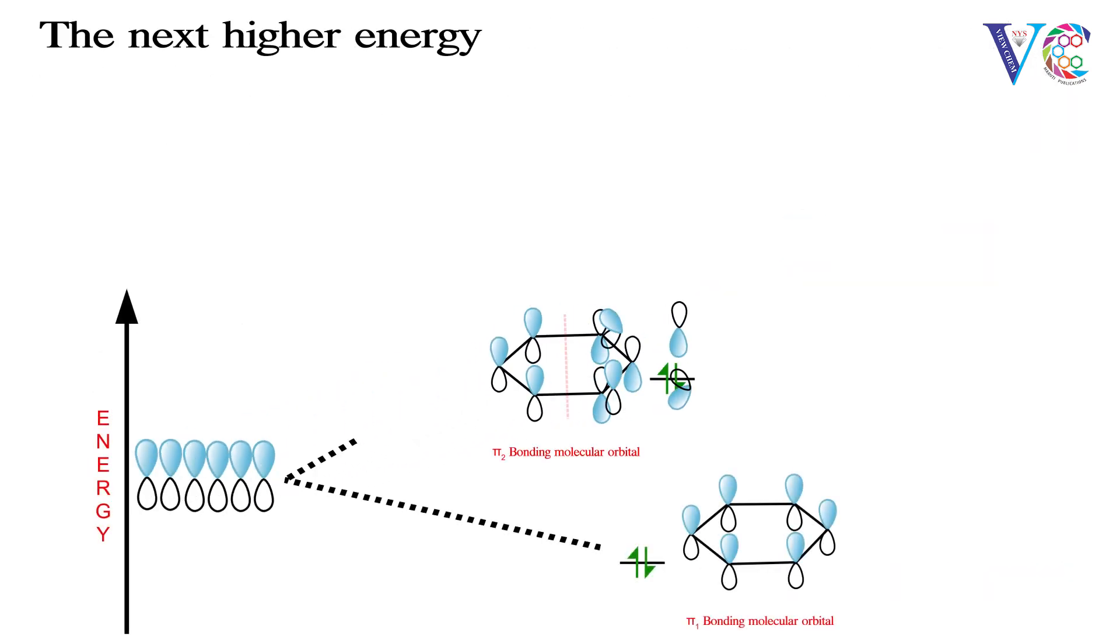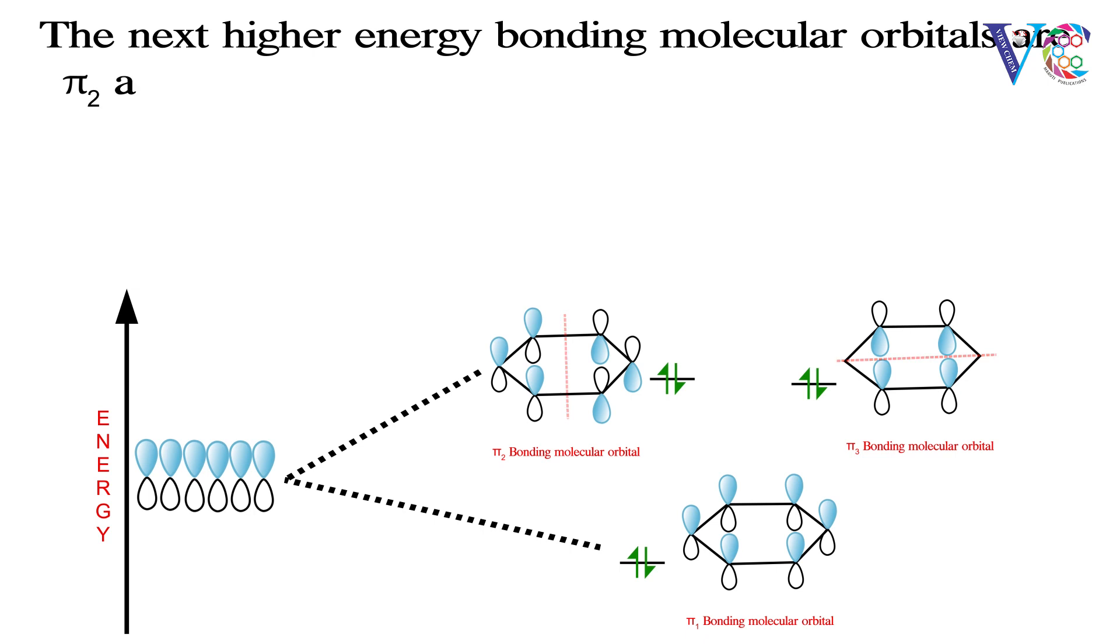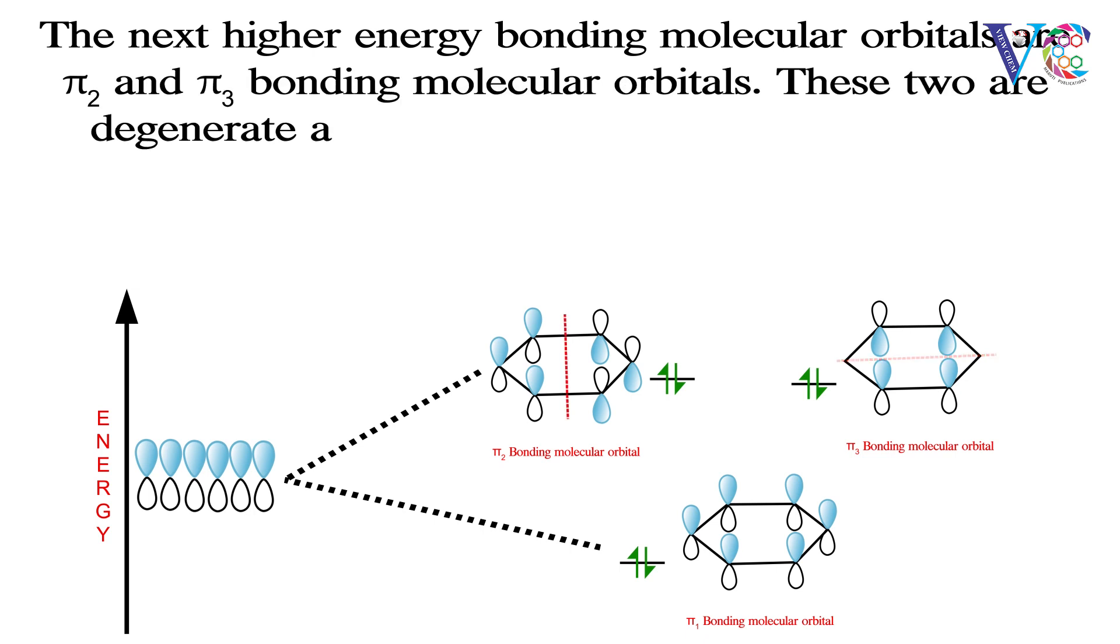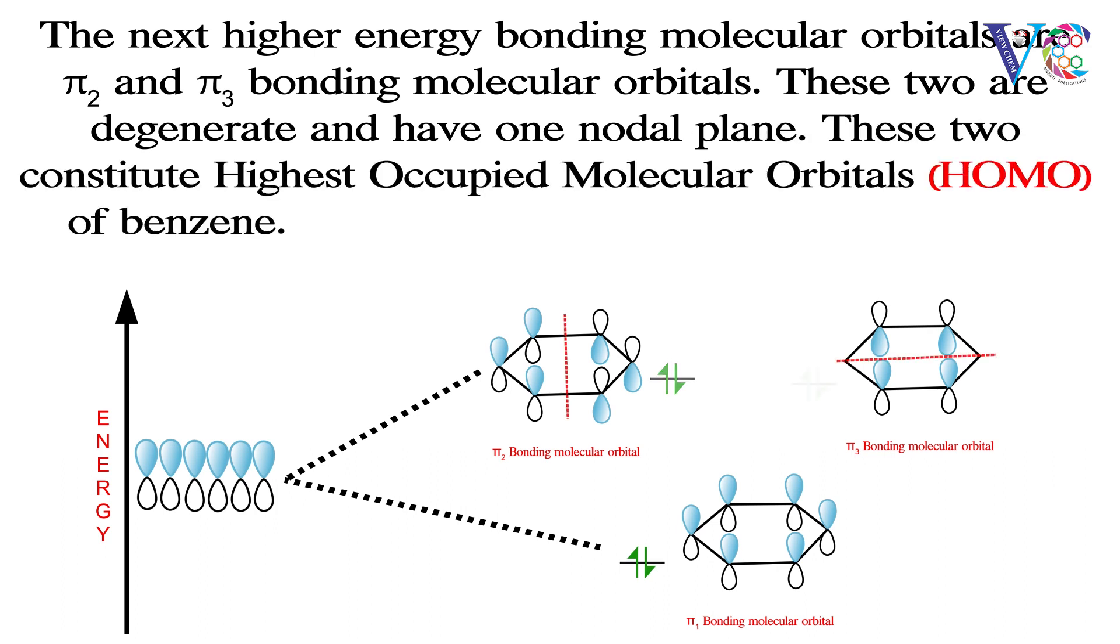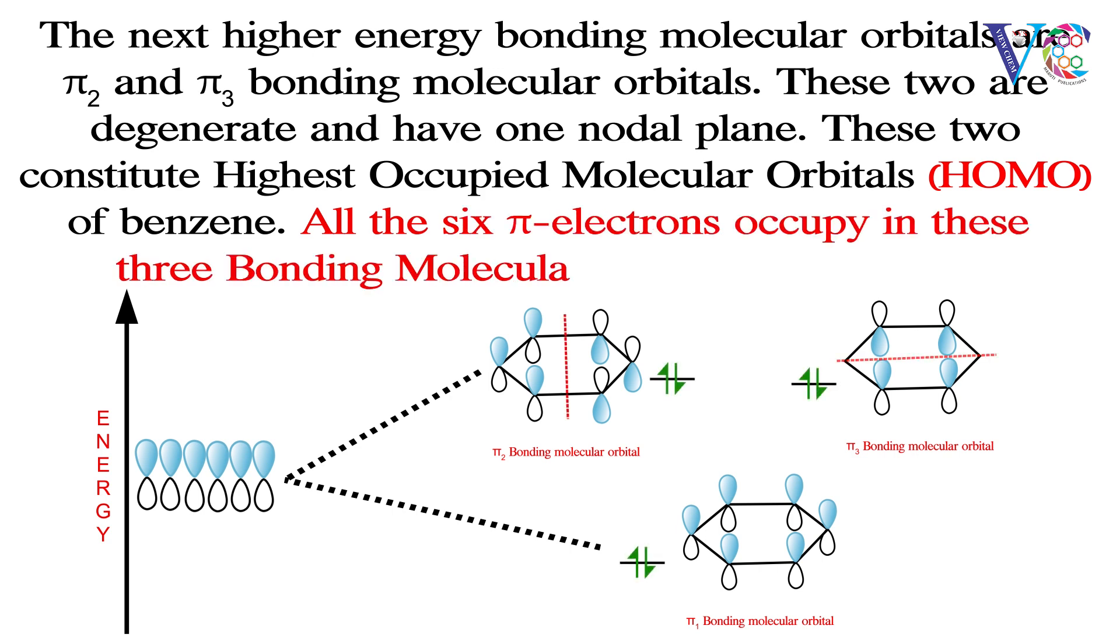The next higher energy bonding molecular orbitals are pi 2 and pi 3 bonding molecular orbitals. These two are degenerate and have one nodal plane. These two constitute highest occupied molecular orbitals of benzene. All the six pi electrons occupy in these three bonding molecular orbitals pi 1, pi 2 and pi 3.